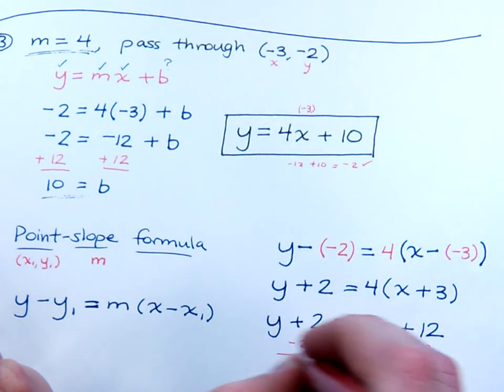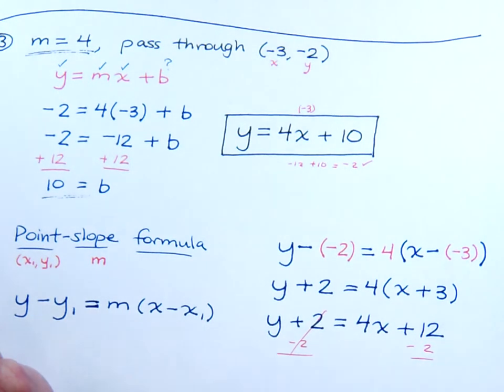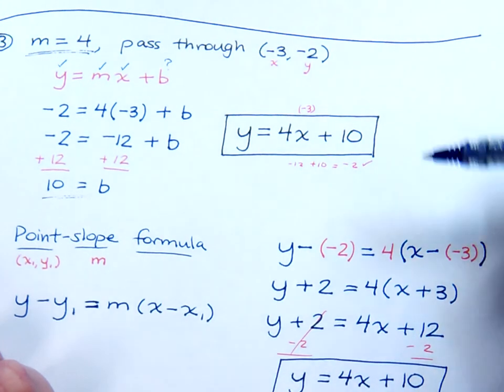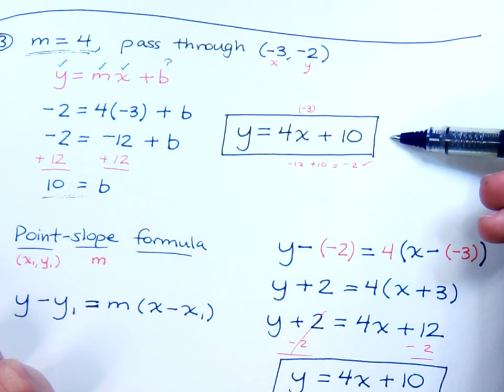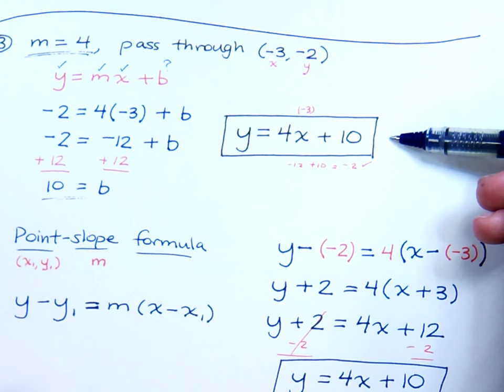Subtract 2 from both sides to get y by itself. And you see that y is equal to 4x plus 10. And this is the same answer that we had before. Two different ways of working the same problem, and we get the same answer.